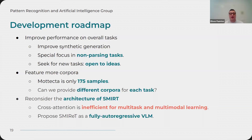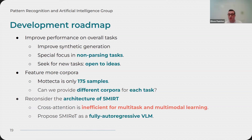The development roadmap involves improving the overall performance across tasks — by improving synthetic data generation, but also putting more focus on non-parsing tasks, since we observe the model performs well on parsing but the others have significant room for improvement. We are also seeking new tasks and are open to new ideas and proposals. Additionally, we are searching for more datasets and pursuing improvements on the architecture itself, as well as comparing to other systems.